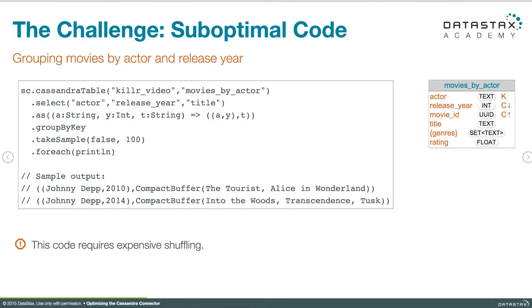Let's take a look at another Cassandra query where we're doing something that seems intuitive and normal but is actually a little slower than it needs to be. Here we're selecting actor, release year, and title from movies by actor. We do a little mapping of that in the third line and then we call group by key. That's going to group all of these movies by actor and year, and then we perform some operations on that. But group by key is going to incur a shuffle — we're pulling the data out of Cassandra, then shuffling it, then performing actions on it. If we could avoid that shuffle, we'd like to.